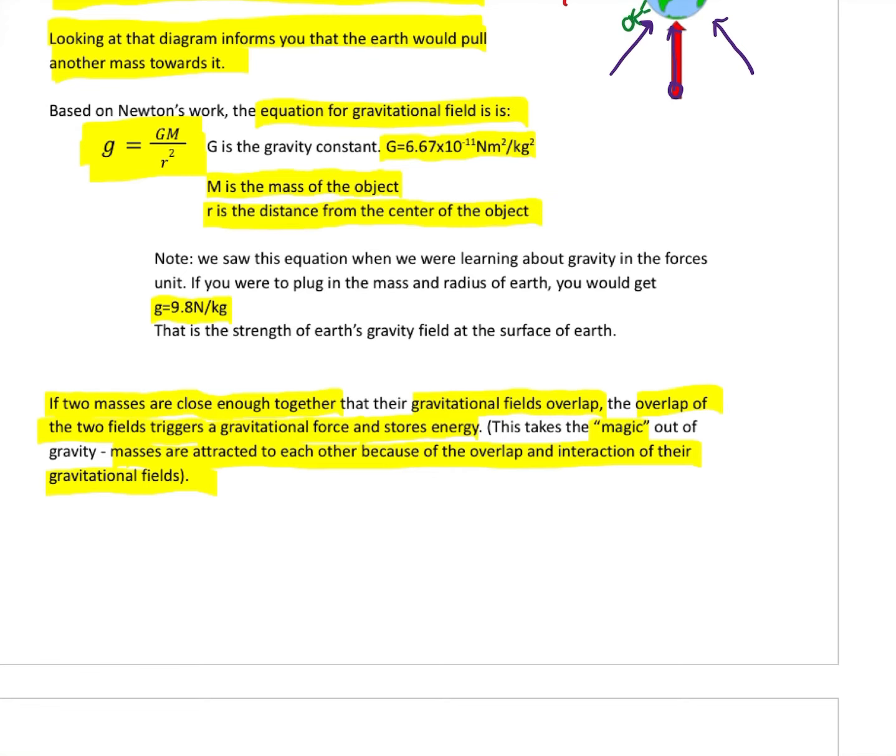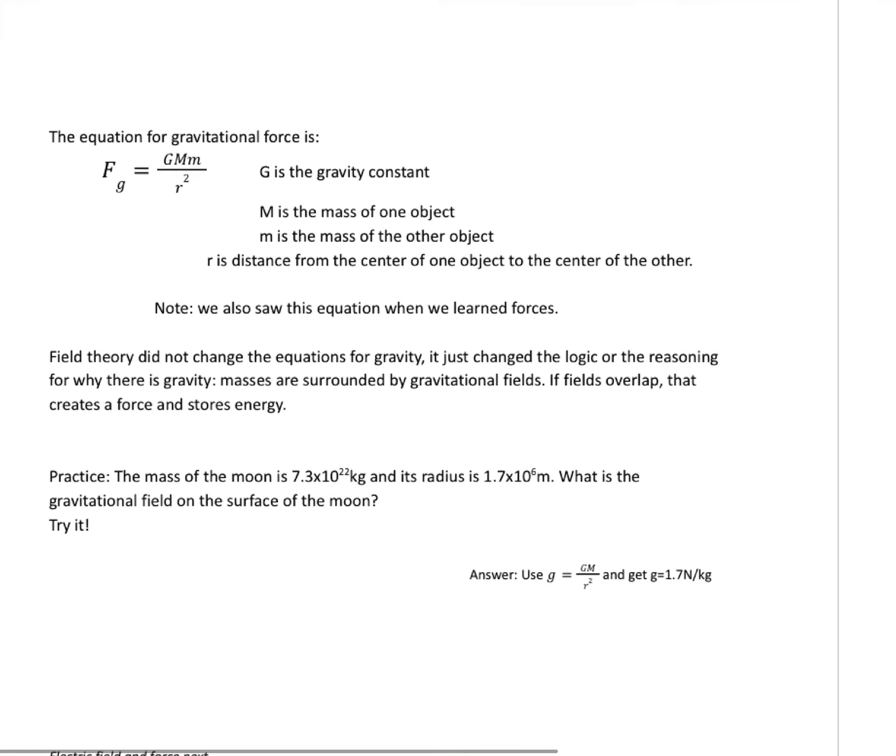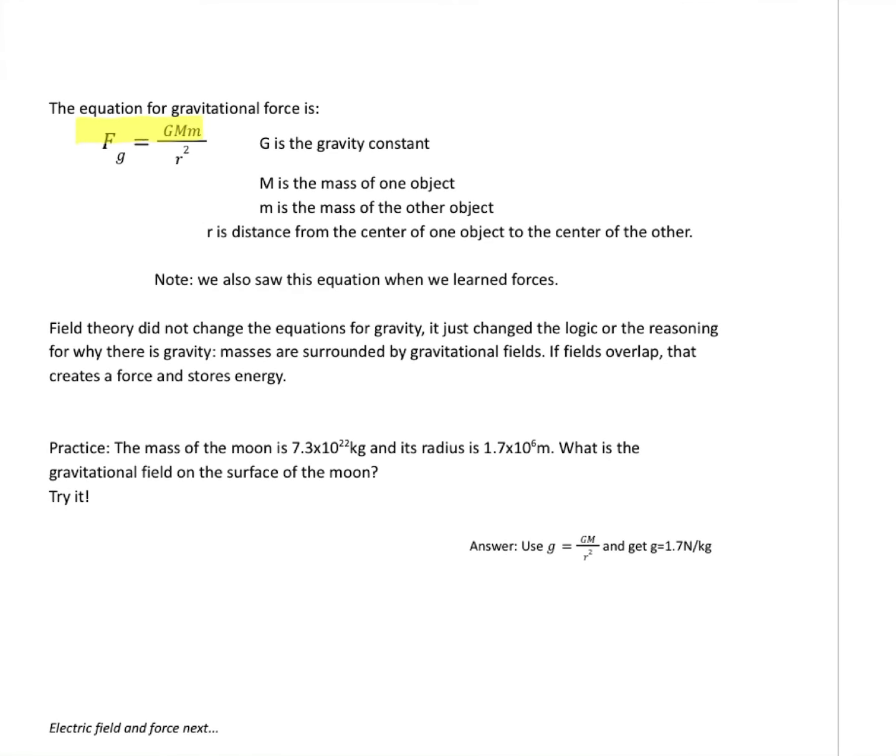So now it's not a magic thing anymore. Things don't attract just because they attract, because the overlap and interaction of these invisible gravitational fields. The equation for gravitational force - it's the exact same equation that Newton came up with. Basically we take that g that we said before, GM/r², and we multiply by the other m. So force of gravity is F_g = GMm/r². G is still the gravitational constant, capital M is going to be the mass of one object, usually I make it the bigger one. Little m is the mass of the second object, and r is the distance from center of one to center of the other. The exact same equation. Field theory didn't change the equations, it just changed the logic, the reasoning.